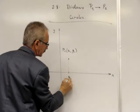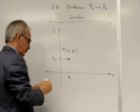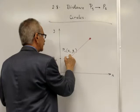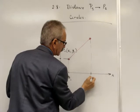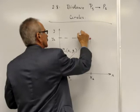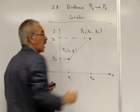And point 2, located at X2, Y2. Now, how do we calculate the distance between these two points?